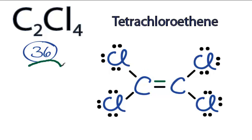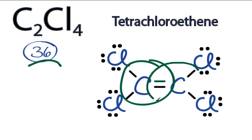We're still using 36 valence electrons, but now this carbon here has 8 valence electrons, and this carbon has 8 valence electrons. And of course, all the chlorines have 8 valence electrons as well.